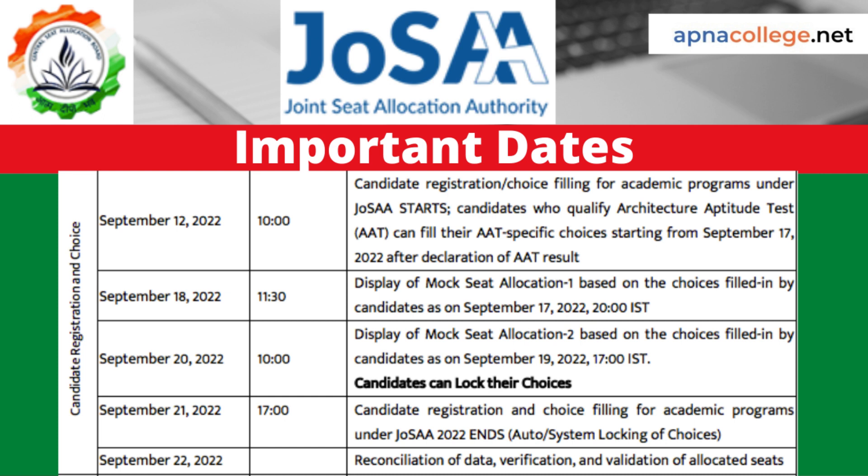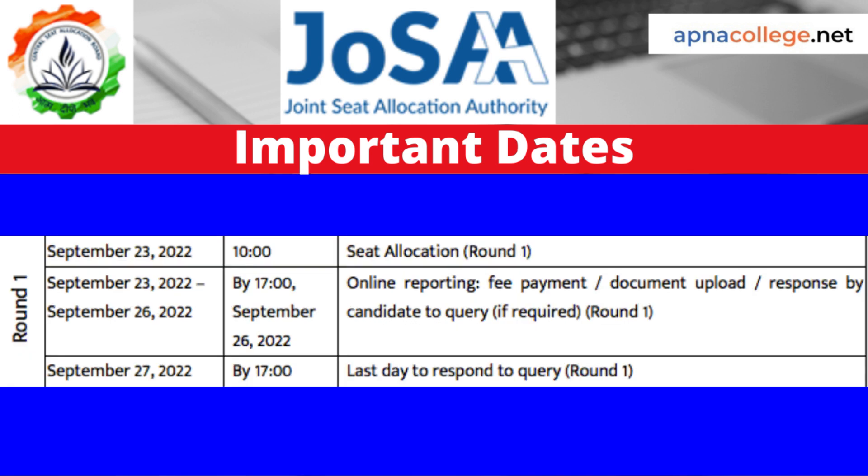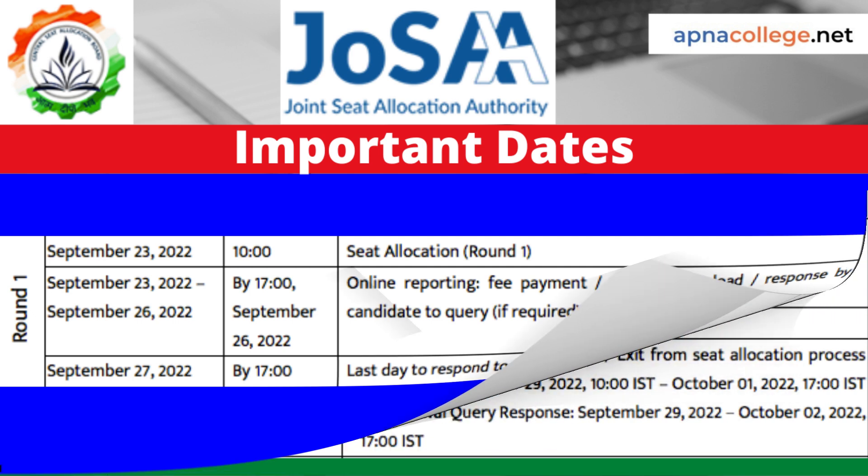On September 21, 2022 at 5 PM, candidate registration and choice filling for academic programs under JOSA 2022 ends. Candidates can lock their choices, or otherwise the system will automatically lock the choices in the last saved format. On September 22, 2022, there will be reconciliation of data, verification and validation of allocated seats. On September 23, 2022 at 10 AM, the first round of seat allocation report for JOSA 2022 will be displayed. From September 23 to September 26, 2022 at 5 PM, the online reporting process continues, including fee payment, document upload, and response to any queries raised at Round 1. By September 27, 2022 at 5 PM, the candidate must respond to any queries raised by JOSA at Round 1.